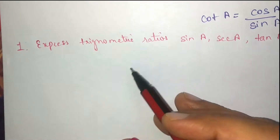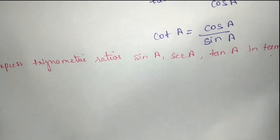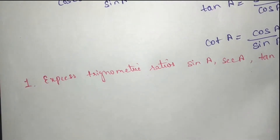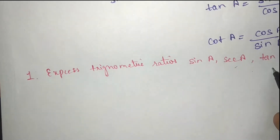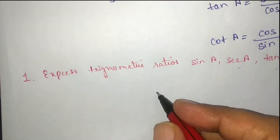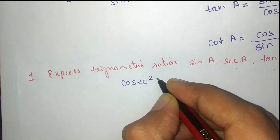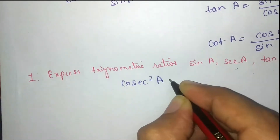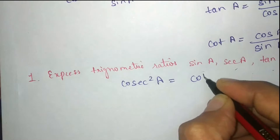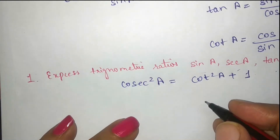Our first question is to express trigonometric ratios sin a, secant a, and tan a in terms of cot a. We find the values of sin a, secant a, and tan a in terms of cot a using the identity: cot²a + 1.